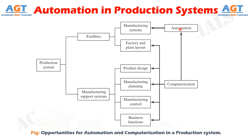Number 1, Automation of the Manufacturing Systems in the Factory, and Number 2, Computerization of the Manufacturing Support Systems. In modern production systems, the two categories are closely related, because the automated manufacturing systems on the factory floor are themselves usually implemented by computer systems that are integrated with the manufacturing support systems and management information system operating at the plant and enterprise levels.